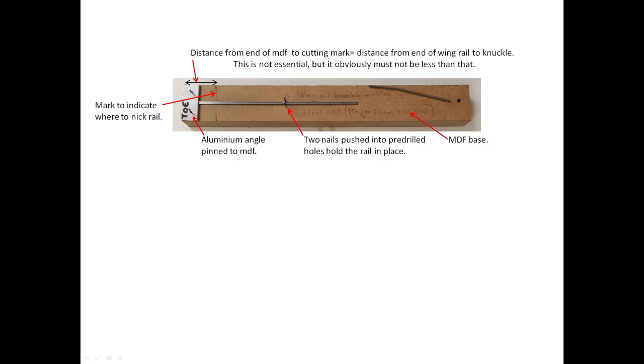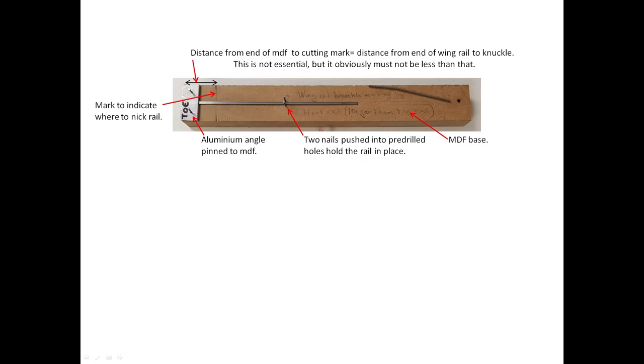This is the jig that I use. It consists of a base made from a rectangle of MDF at the end of which is attached a piece of aluminium angle held proud of its surface by a distance equal to the width of the rail to be bent. The other leg of the aluminium angle is hard up against the end of the block. The rail is slid into the slot hard up against the vertical section of the aluminium angle and the nick is made. The second rail is inserted the other way up so that it can be bent in the opposite direction from the first.